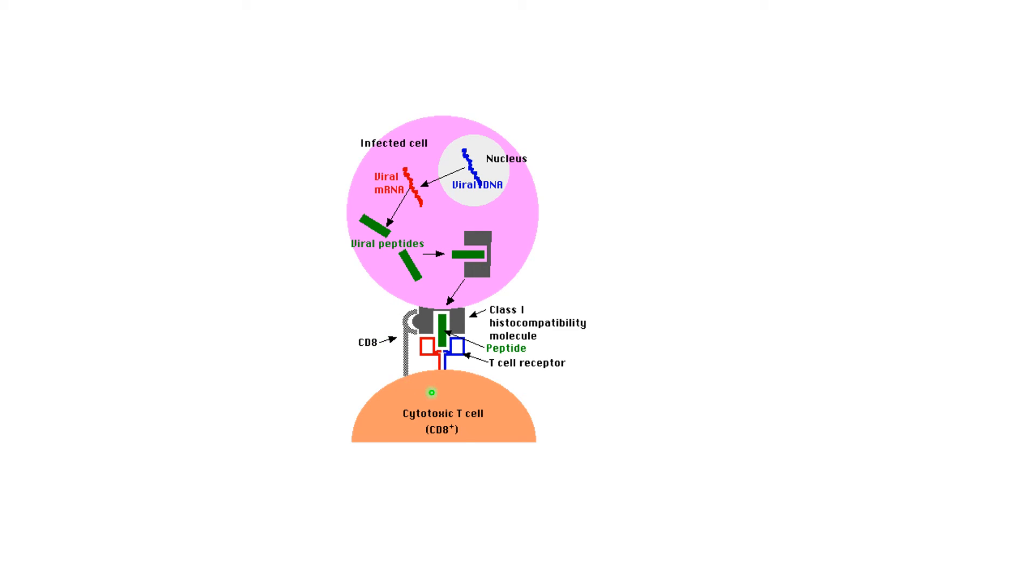When this all comes together, along with chemical signals from the T-helper 1 cell, the inactive cytotoxic T-cell is activated. It divides by mitosis to produce clones. Some clones become memory cells and wait around in case the same antigen is encountered again in the future.